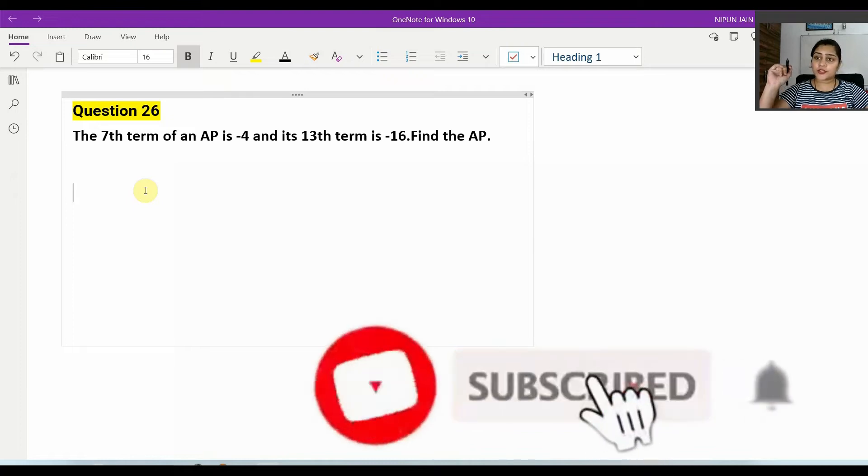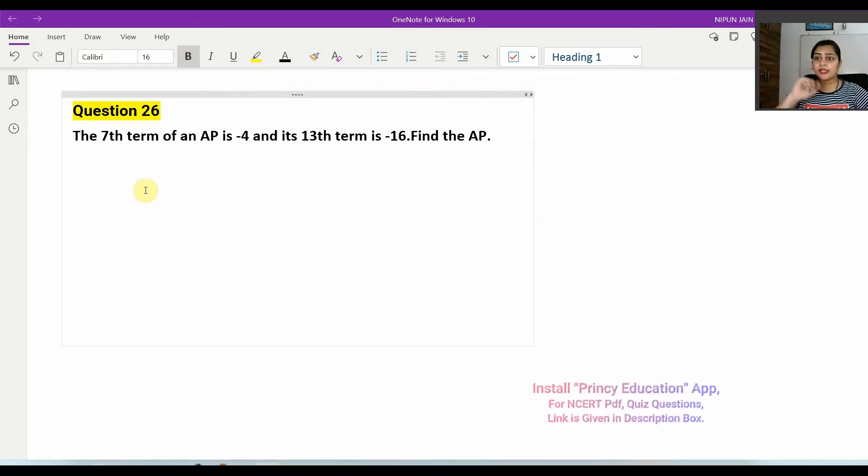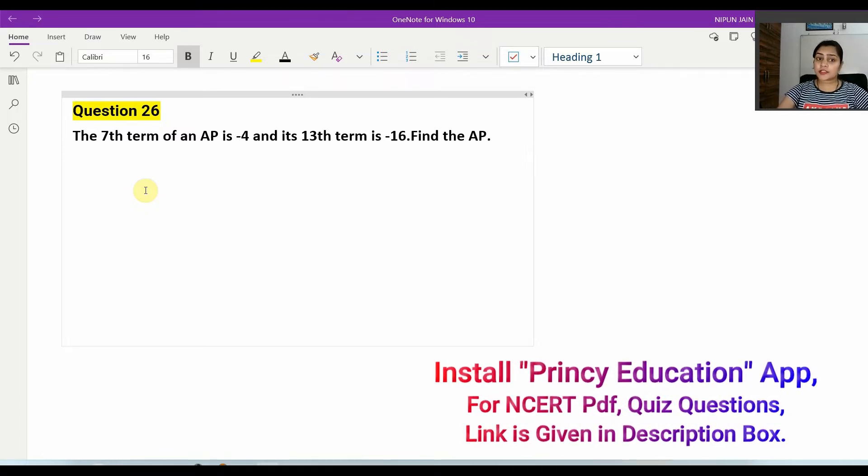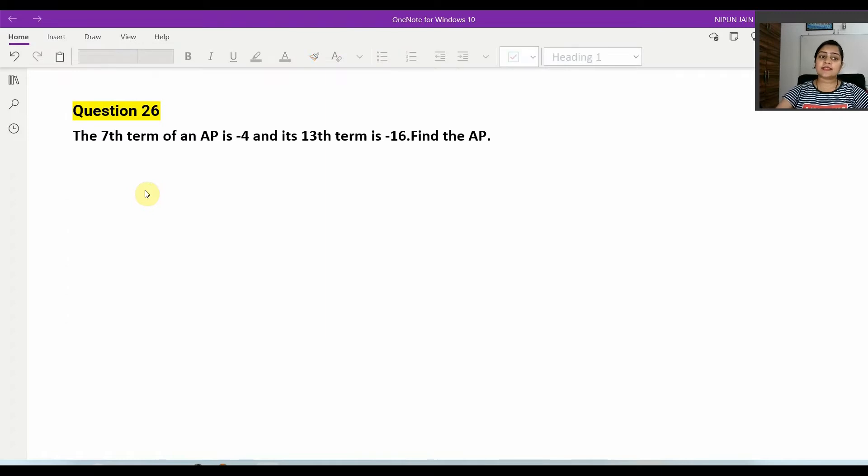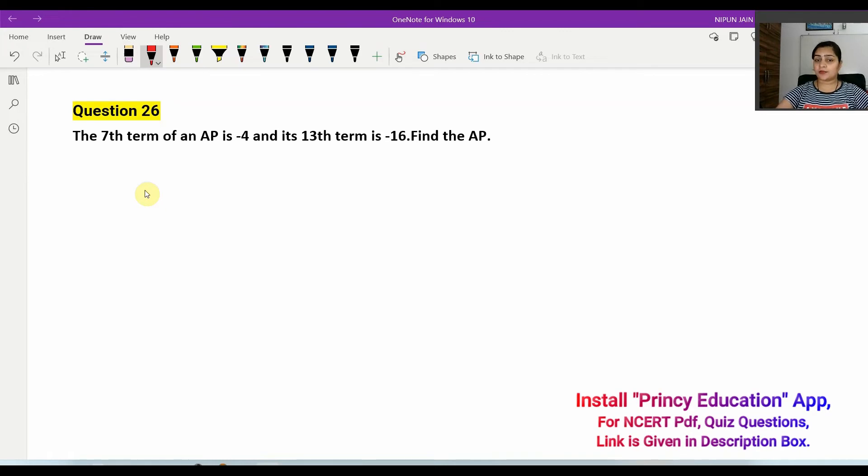Hello everyone, welcome back to Prince's Education Channel. Today we are going to talk about class 10th RS Aggarwal's book, new edition, chapter 5, exercise 5, question number 26. It's a very interesting question. Question 26 states: the 7th term of an AP is minus 4 and the 13th term of an AP is minus 16. Find the AP.